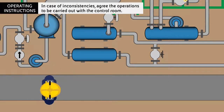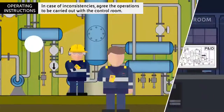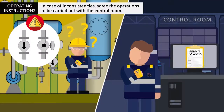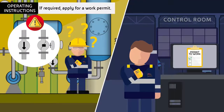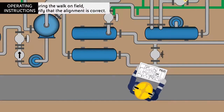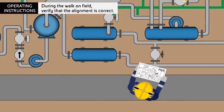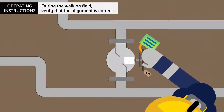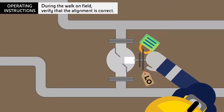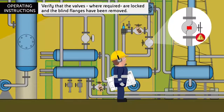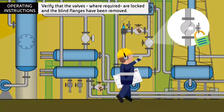In case of inconsistencies, agree the operations to be carried out with the control room and, if required, apply for a work permit. During the walk-on field, verify that the alignment is correct, the valves where required are locked, and the blind flanges have been removed.